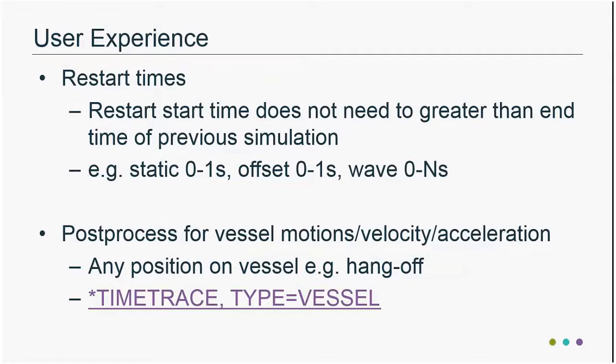We've also allowed users to post-process for local vessel degrees of freedom. You can look at vessel movements at the hangoff point using the 'time trace type equals vessel' command. In old versions of FlexCom, you'd have to insert a rigid element from the vessel centre of gravity to the hangoff point and look at time histories at that particular node in 6 degrees of freedom — and the angular terms wouldn't necessarily represent Euler angles, just FlexCom's internal solution scheme terms. Now you can directly request time histories of heave, sway, surge, yaw, roll, or pitch for any point on the vessel.